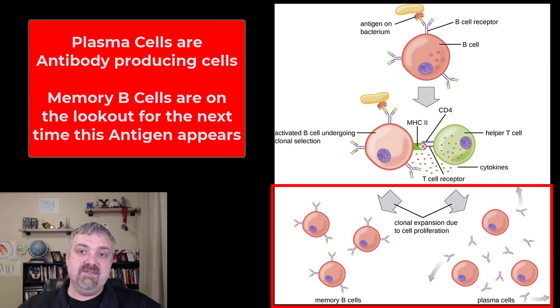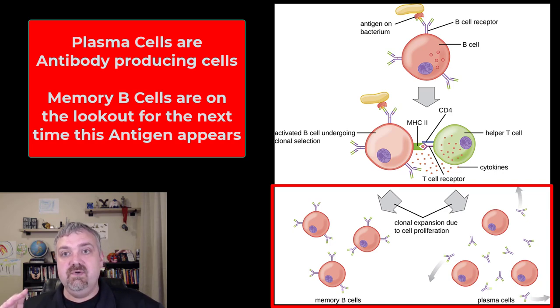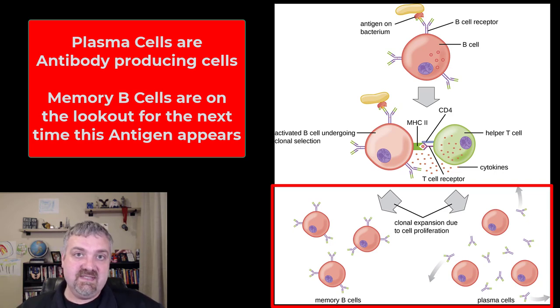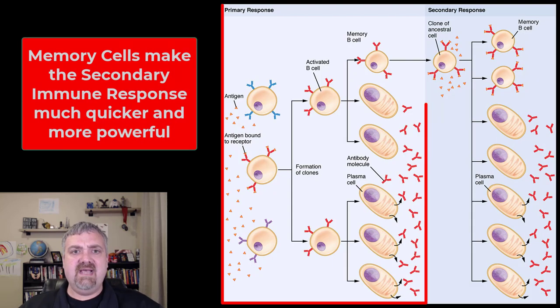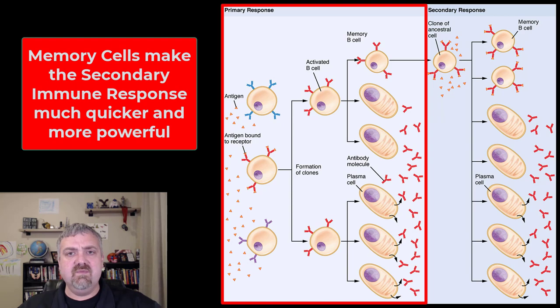The memory B cells are going to make sure that the next time you see the same antigen from the same bacteria, your immune system will be ready to go. This has to do with the primary versus secondary immune responses, which we've covered in a separate video.